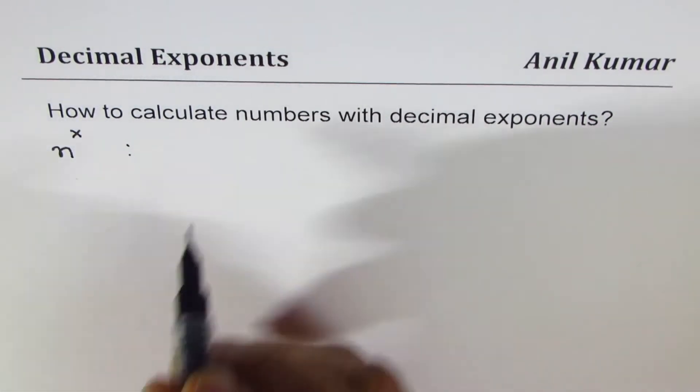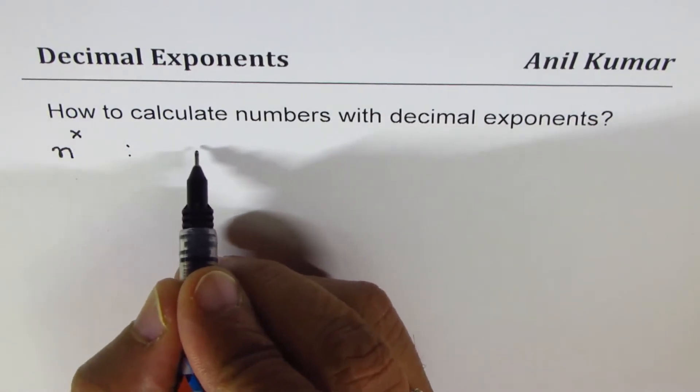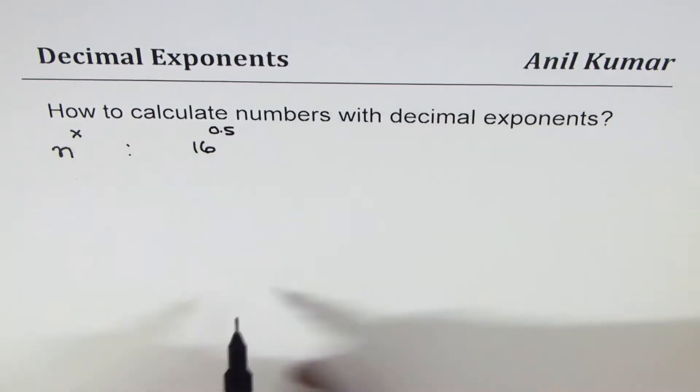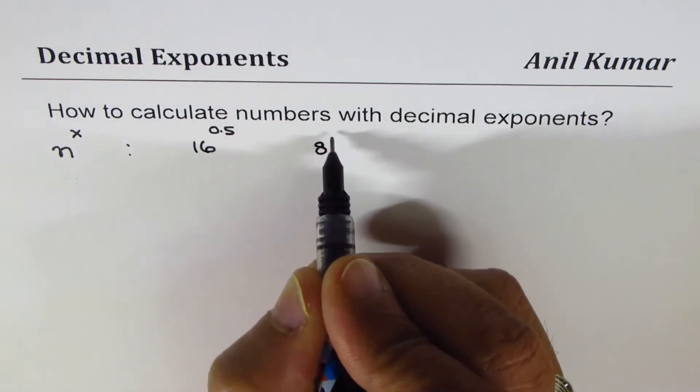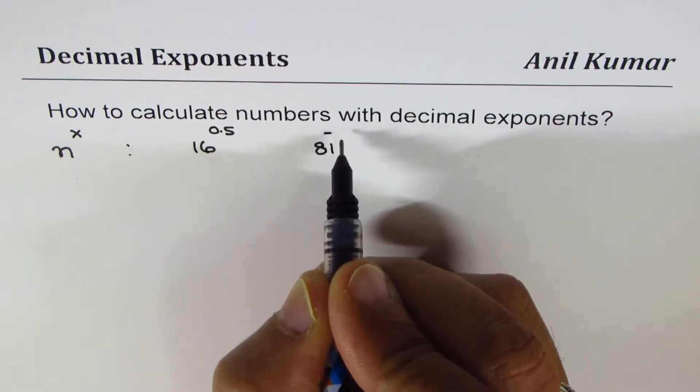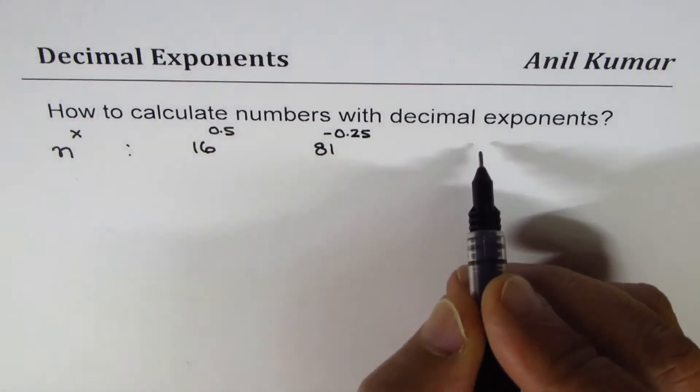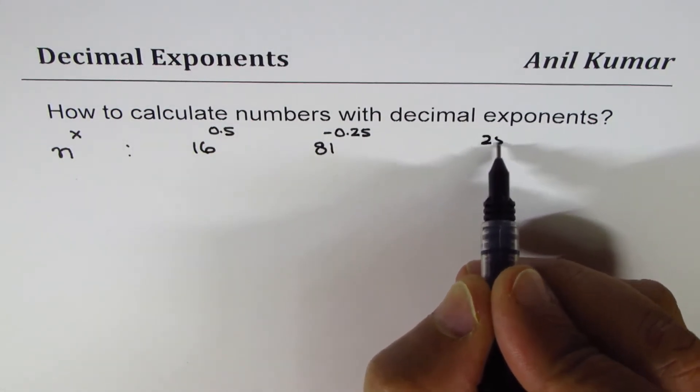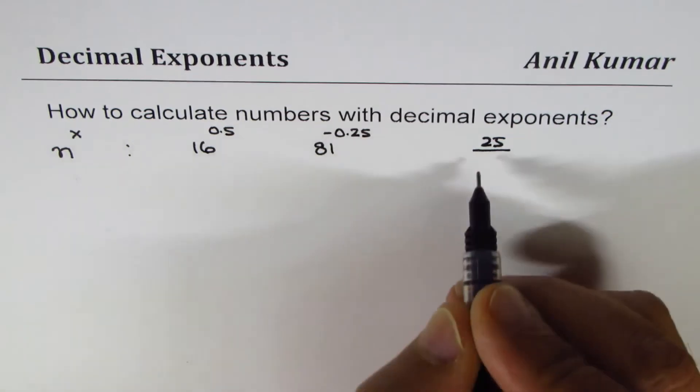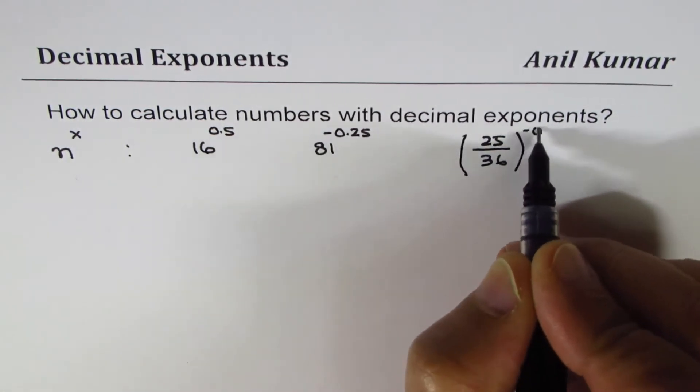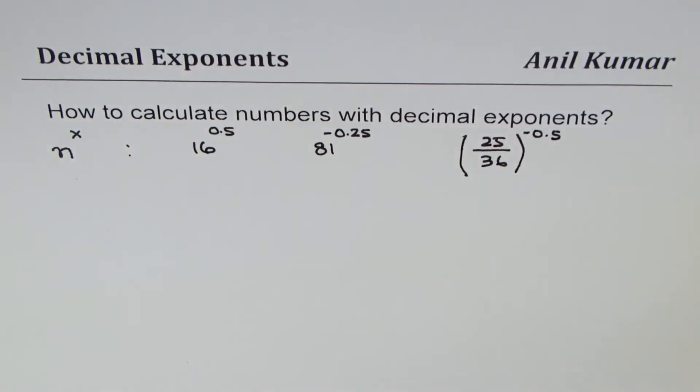For example, we'll try to find out what is 16 to the power of 0.5. We can find what is 81 to the power of minus 0.25. We could do something like 25 over 36 to the power of minus 0.5. We'll take these kinds of examples and then have some practice questions.